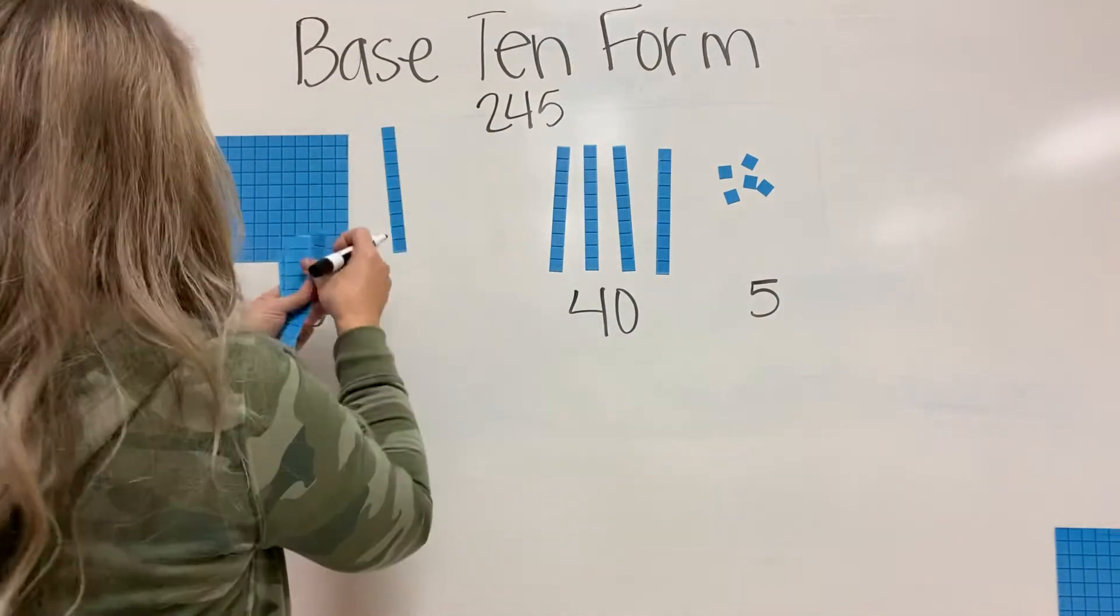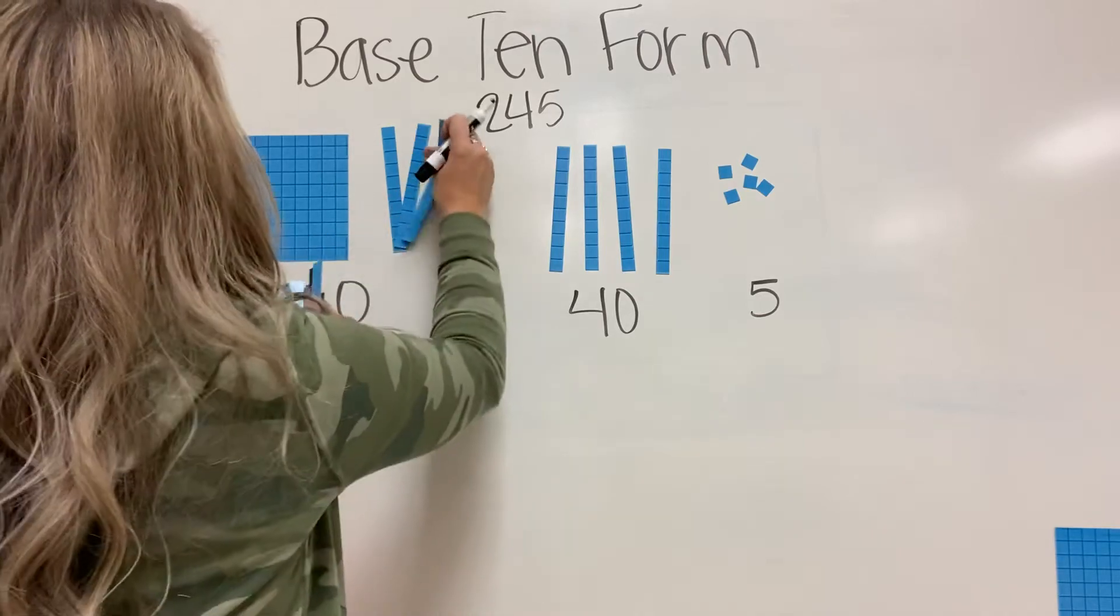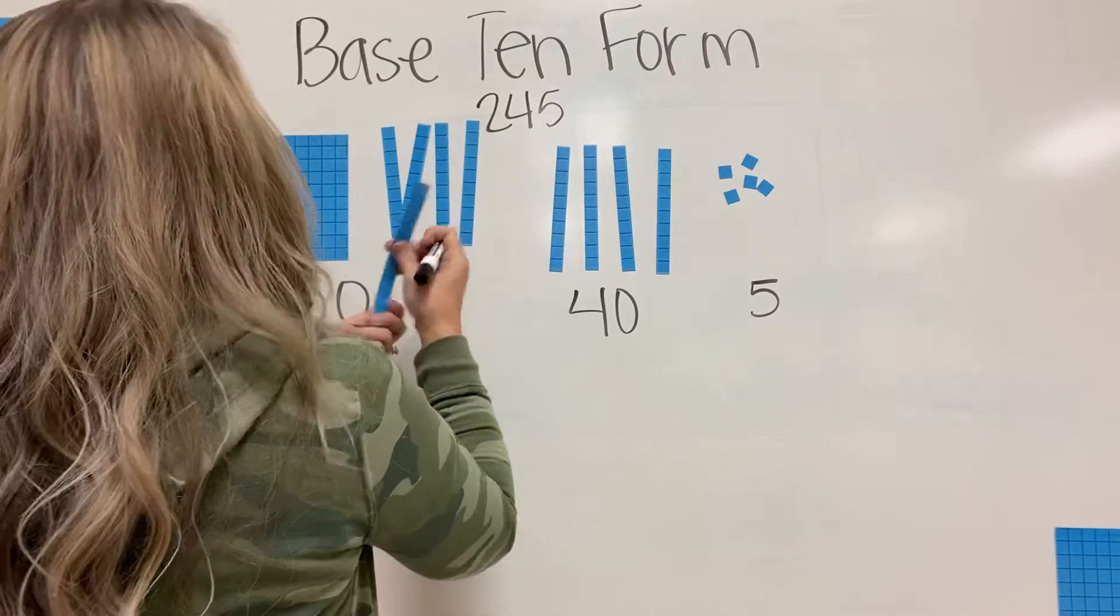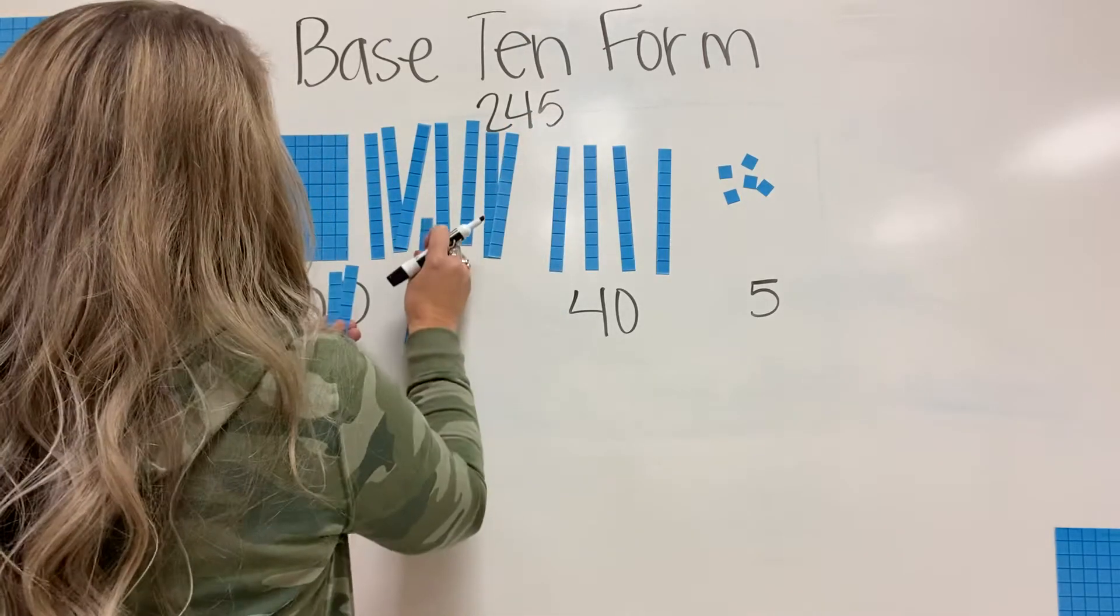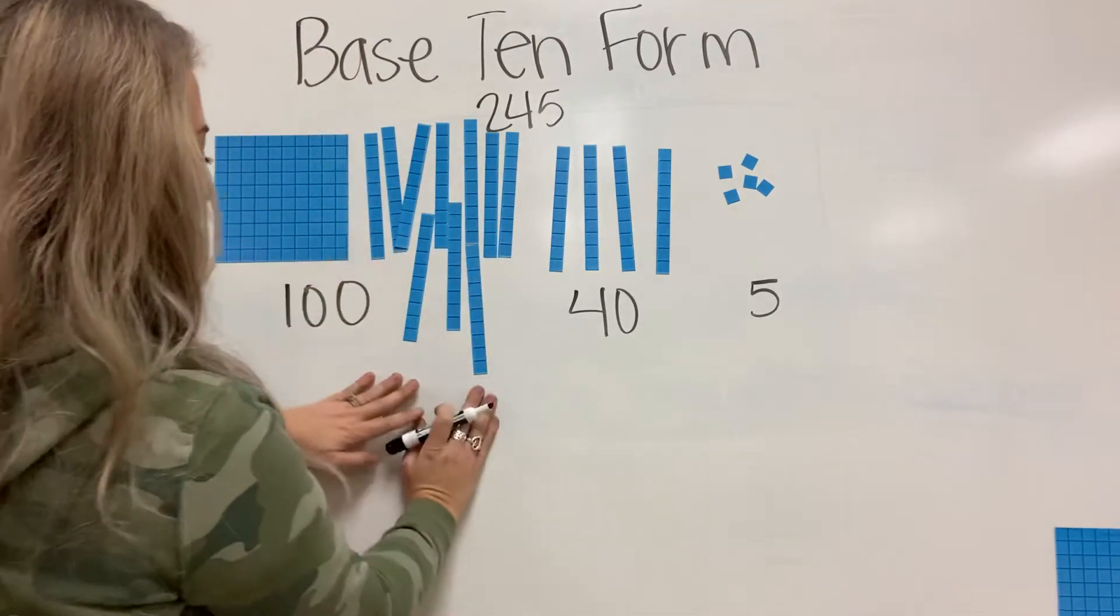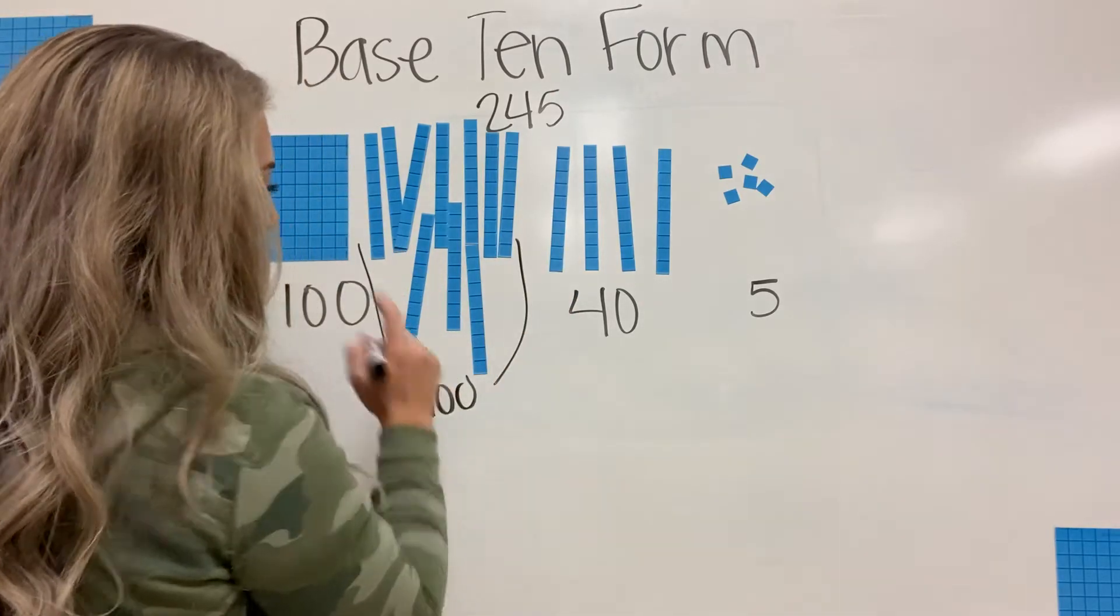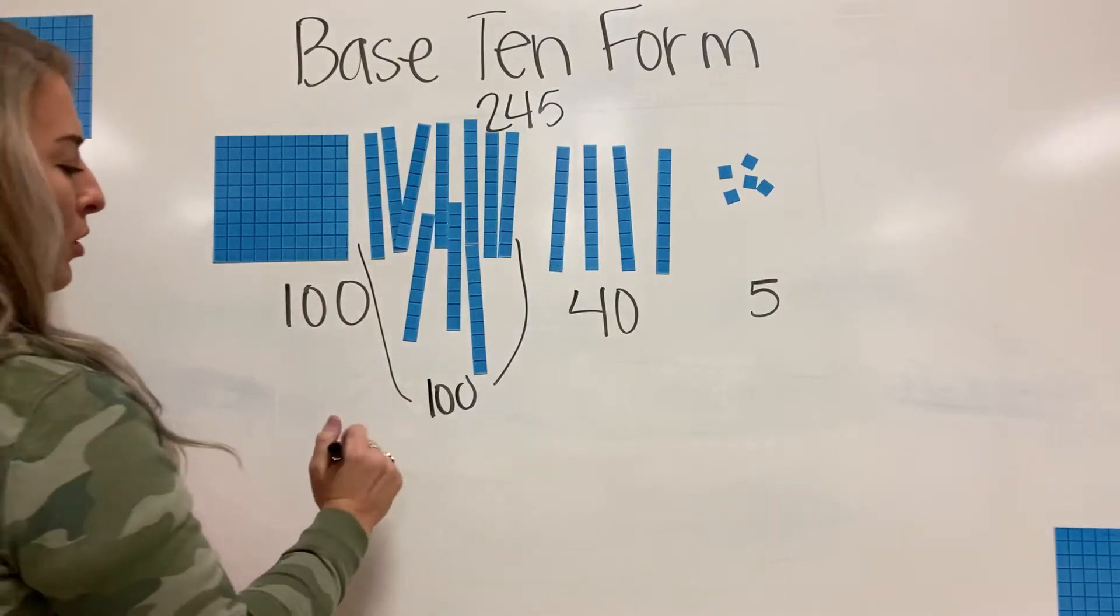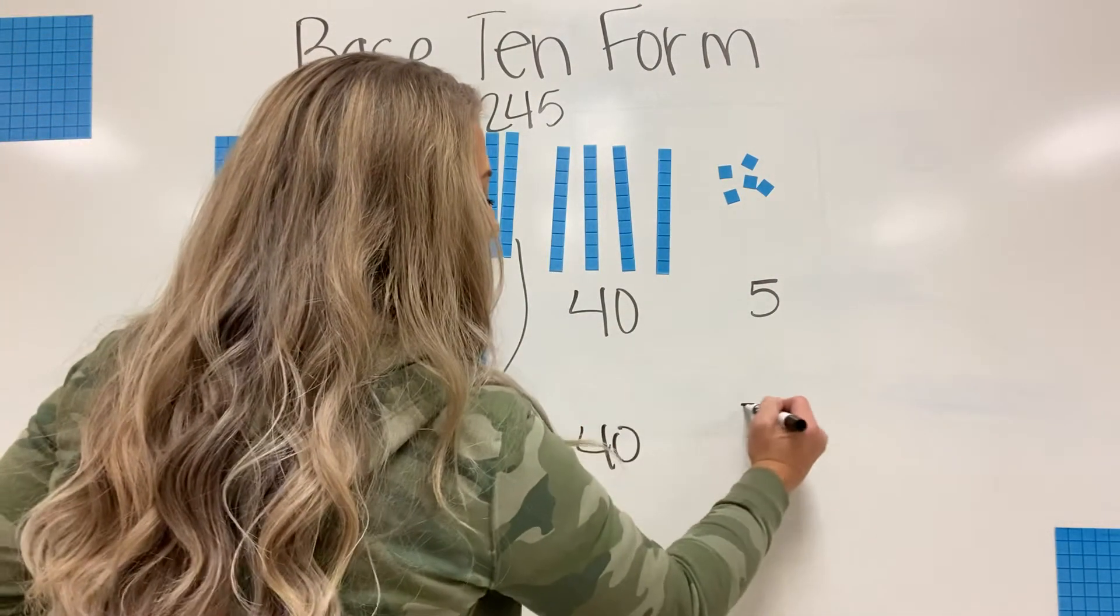So I have 10, 20, 30, 40, 50, 60, 70, 80, 90, 100. So now I have 100. I have 100 right here. This is still that hundreds block I traded. I still have the 40 and I have five ones. So 100 and 100 together is still 200, and then I have 40 and I have five.